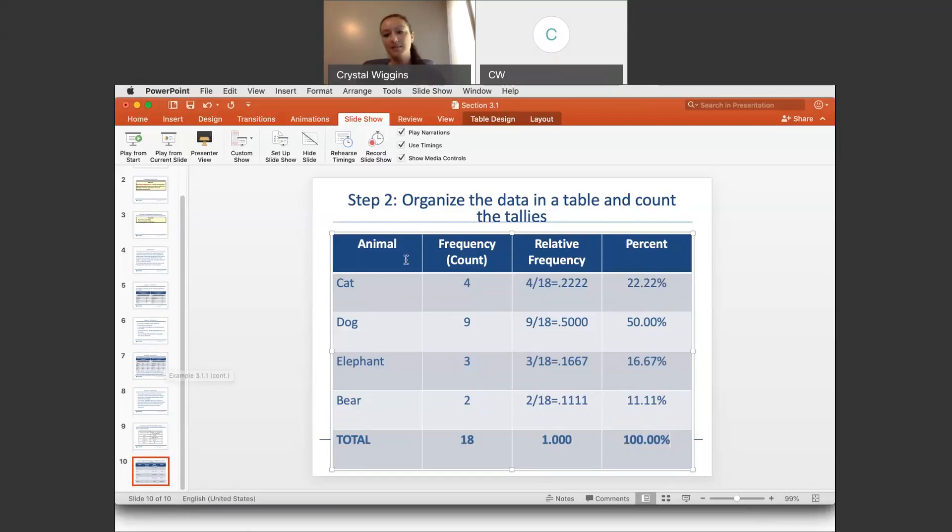Okay, and that is building a very basic frequency table. These are the most common columns in a frequency table, although there are others like midpoint and cumulative frequency. But these are the most useful columns in my opinion. And this is for categorical qualitative data. So that concludes 3.1.